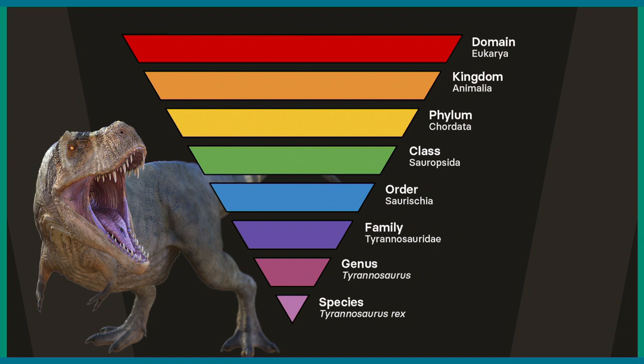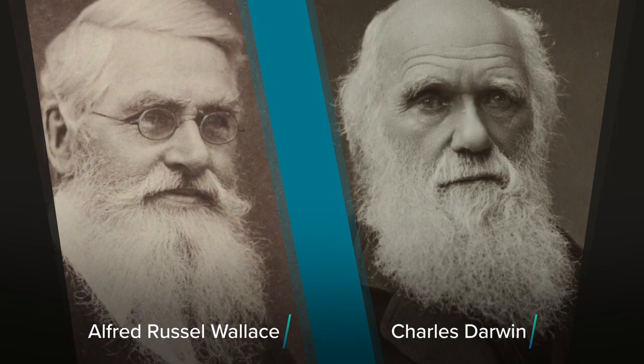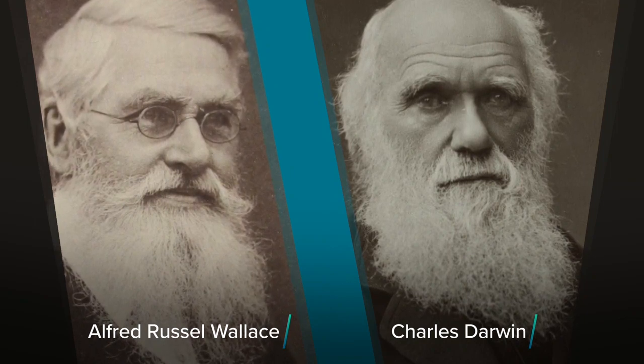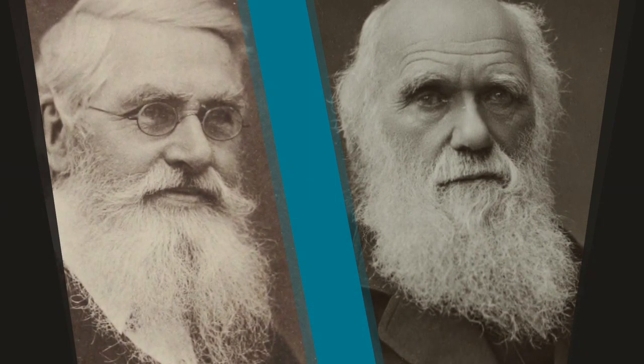Still, when Linnaeus developed his system, no one had yet figured out why organisms shared characteristics. How do these shared traits arise, and what do they mean? The key to unlocking this mystery wouldn't be discovered until a century later, when two other revolutionary scientists hit the scene and changed the way we view the history of life on Earth. This lesson is all about the important contributions of Charles Darwin and Alfred Russell Wallace, who both independently came up with the theory of evolution by natural selection — the guiding principle that underlies all biology, including paleobiology, and allows us to understand why life on Earth shares features.